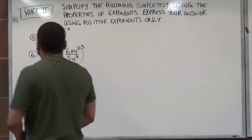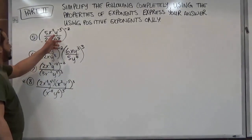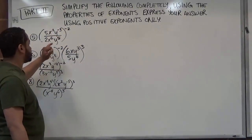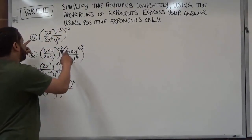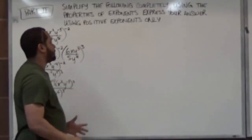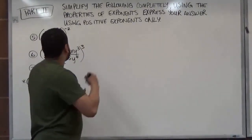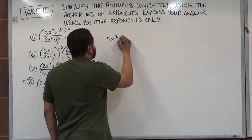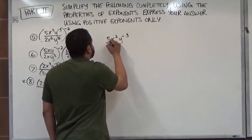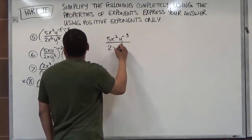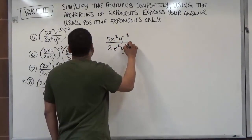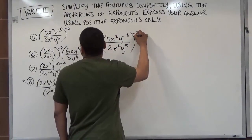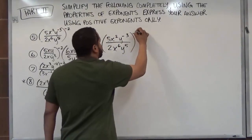We have here 5x to the second power times y to the negative third, divided by 2x to the sixth power y to the fifth, all in parentheses raised to the negative second power. We're going to follow the best techniques to solve these using the properties of exponents. The very first thing we're going to do is work with the inside of the problem, and then we'll deal with the outside exponent because in the order of operations, we're dealing with the insides first.